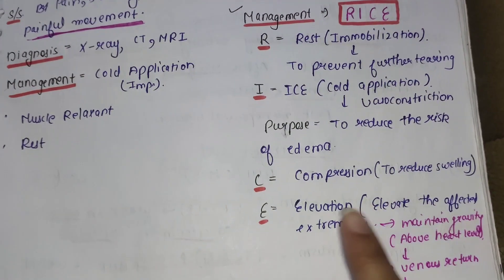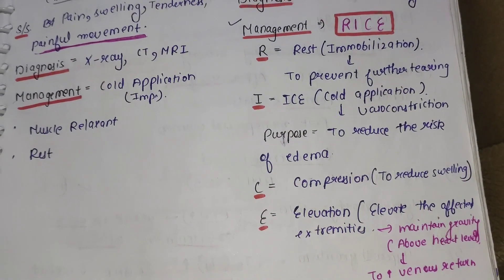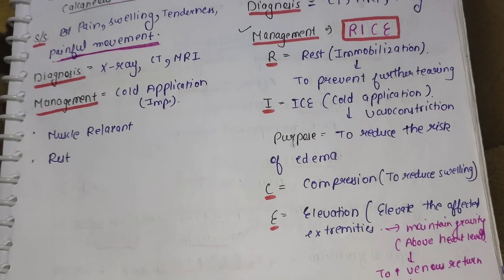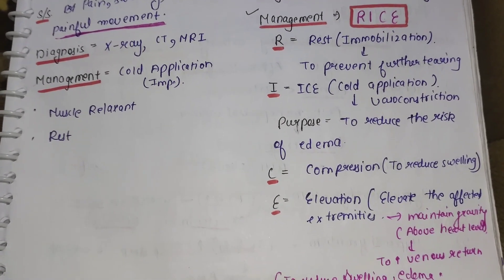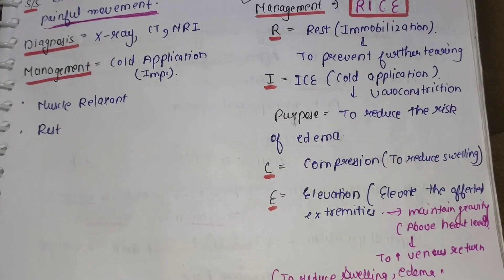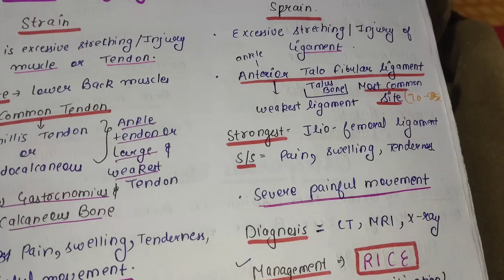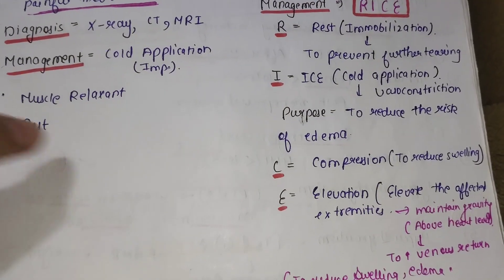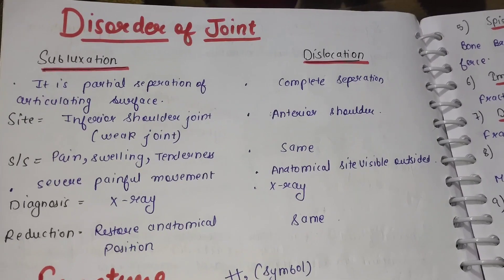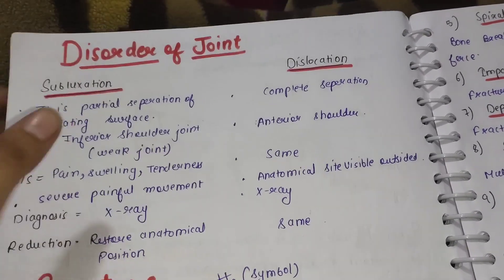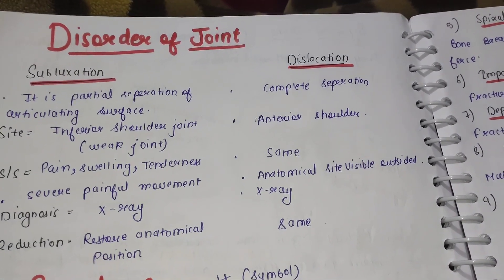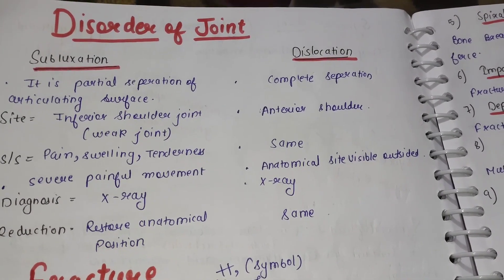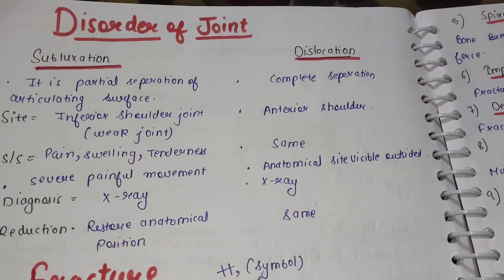Last — E से Elevation. जो affected extremity होती है उसको elevate करवाया जाता है, mainly above heart level, ताकि venous return increase हो और swelling और edema का risk reduce हो. So sprain में injury होती है ligament की, और इसमें RICE therapy बहुत important होती है. Next video में subluxation and dislocation के बारे में detail में पढ़ेंगे. Thank you for watching — if you liked the video, like and subscribe to my channel and hit the bell icon.